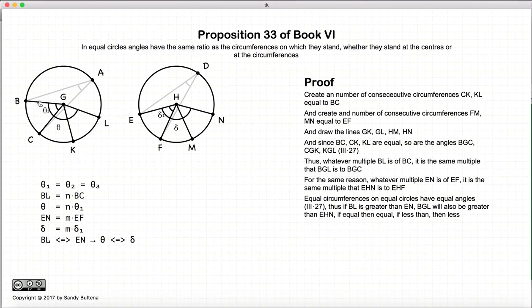Now, if BL was greater than EN, then theta would be greater than delta by Proposition 27 of Book 3. If BL was less than EN, theta would be less than delta. And if BL equals EN, theta would equal delta. This is what we're saying: if BL is greater than, equal to, or less than EN, then theta would be equivalently greater than, equal to, or less than delta.